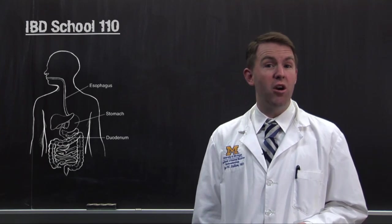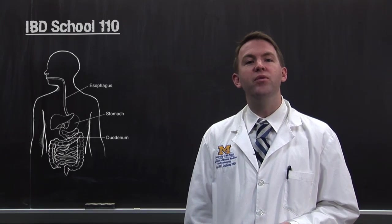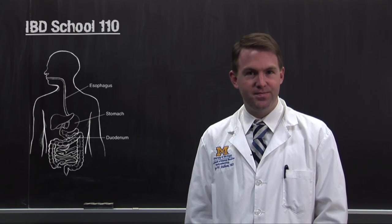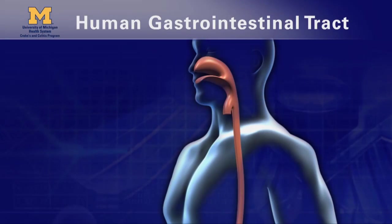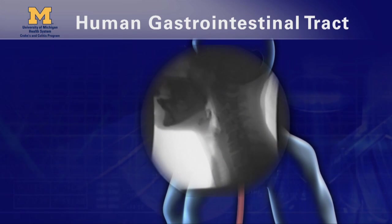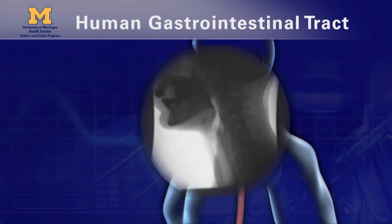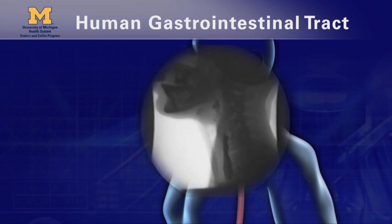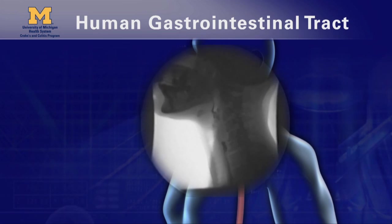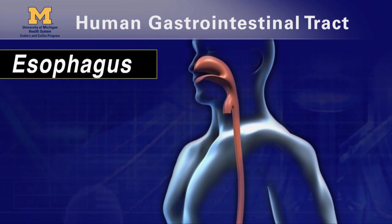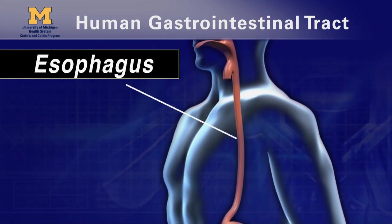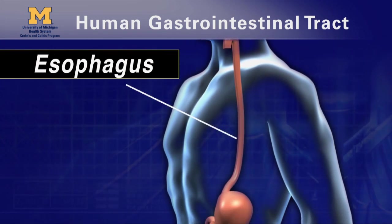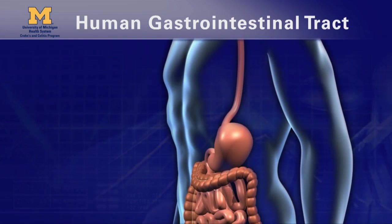We'll start at the beginning, with food moving from the mouth through the esophagus and into the stomach. When you swallow food, it passes through the mouth to the pharynx, and then enters the esophagus. The esophagus is a thick muscular tube in the chest that pushes food down into the stomach.